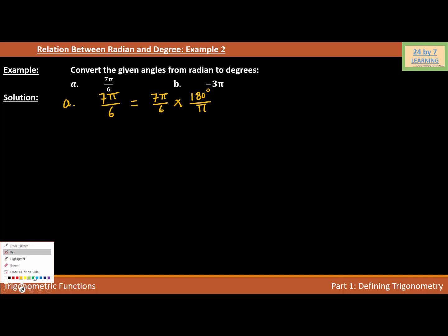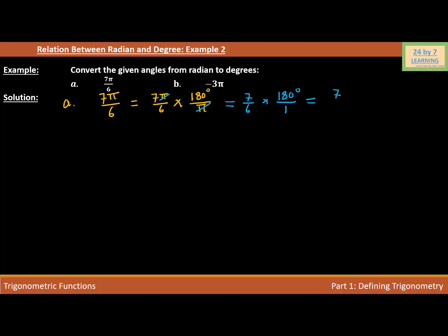As you can see, I can cancel this π out — π in the numerator and π in the denominator cancel. If I do that, I have 7/6 left from the first term, times 180 degrees over 1. Now I'm going to multiply numerator by numerator, giving 7 times 180 degrees over 6.